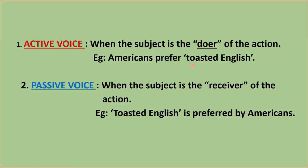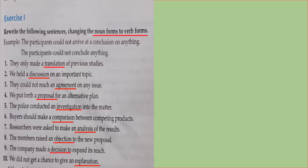Notice the difference: 'prefer' has changed into 'is preferred by.' This is the major change to bear in mind when changing voices from active to passive or vice versa. The first exercise says: rewrite the following sentences changing the noun forms to verb forms. Example: 'The participants could not arrive at a conclusion on anything' — the changed version is 'The participants could not conclude anything.' So 'conclusion' has become 'conclude.' This is a warm-up exercise before the main voice conversion exercises.